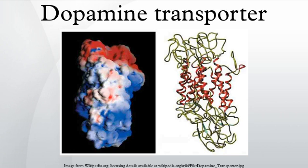Once inside, amphetamine binds to TAAR1 or enters synaptic vesicles through VMAT2. When amphetamine binds to TAAR1, it reduces the firing rate of the postsynaptic neuron and triggers protein kinase A and protein kinase C signaling, resulting in DAT phosphorylation. Phosphorylated DAT then either operates in reverse or withdraws into the presynaptic neuron and ceases transport. When amphetamine enters the synaptic vesicles through VMAT2, dopamine is released into the cytosol. Amphetamine also produces dopamine efflux through a second TAAR1-independent mechanism involving CaMKII-mediated phosphorylation of the transporter, which putatively arises from the activation of DAT-coupled L-type calcium channels. The dopaminergic mechanisms of each drug are believed to underlie the pleasurable feelings elicited by these substances.